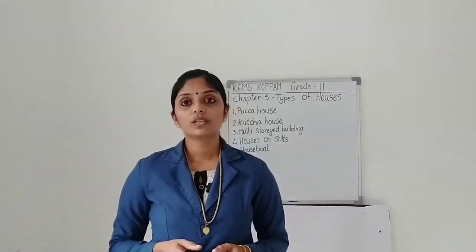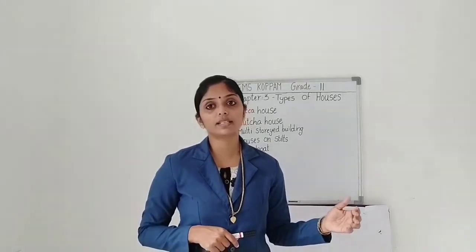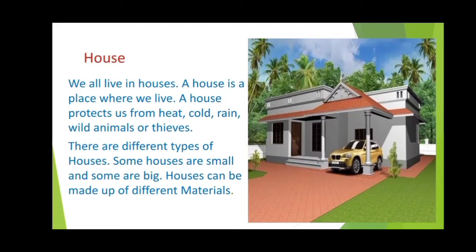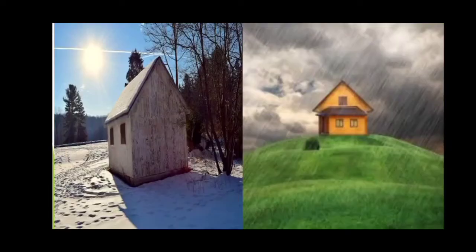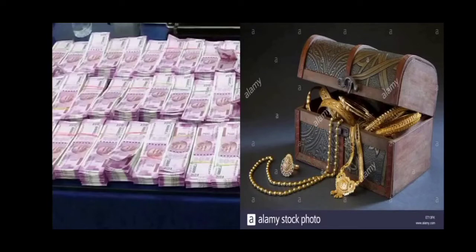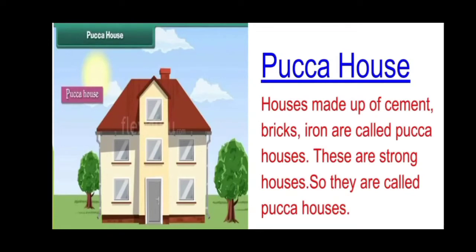Now I will show you some pictures of these houses and explain them once again. We all live in houses — a house is a place where we live. A house protects us from cold, storm, rain, heat, wild animals and thieves, and we can keep all our valuable things safely in our house. There are different types of houses of different shapes, sizes and materials.